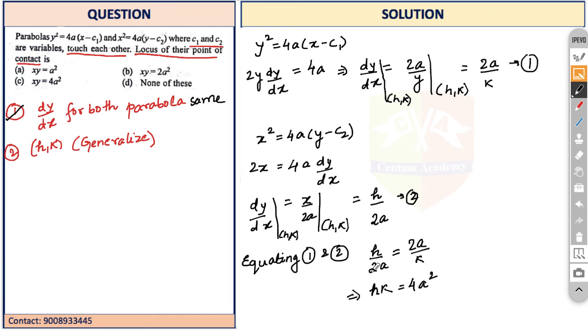Now we do the next step: the process of generalization. Generalization means you replace h with x and k with y - that's the typical standard procedure in locus questions. So my answer would be xy = 4a², which is option C.